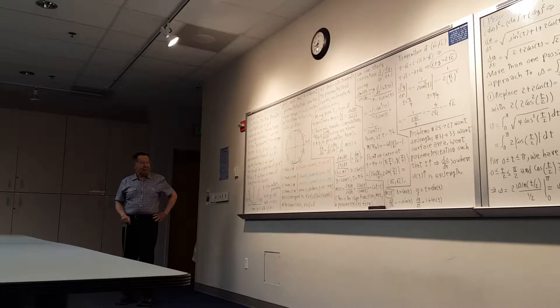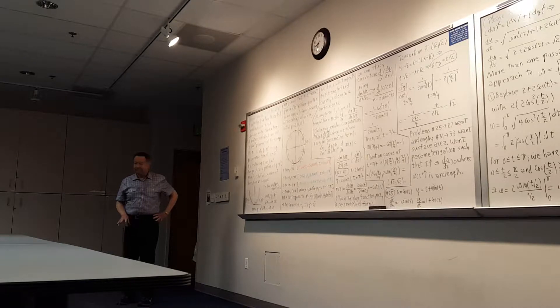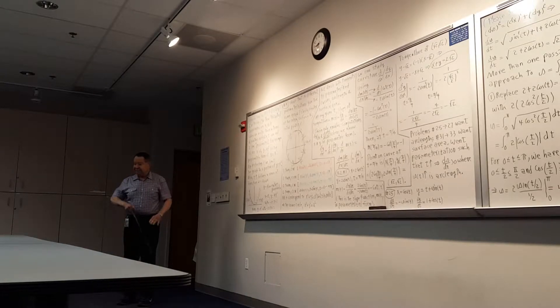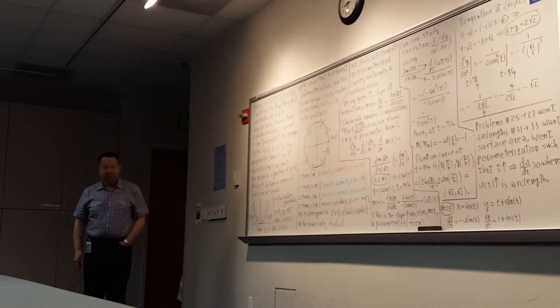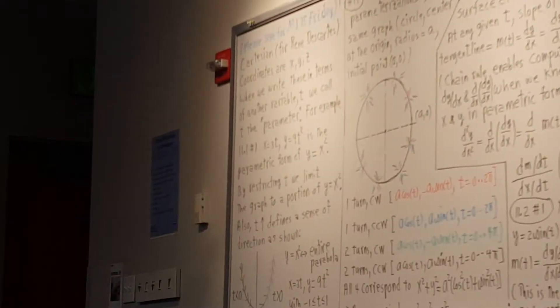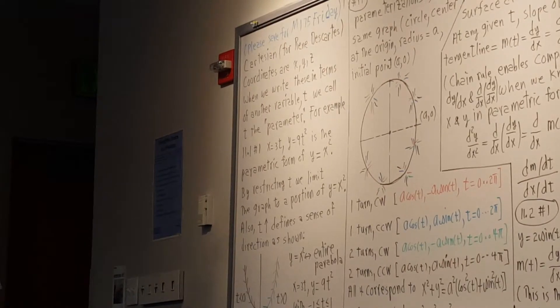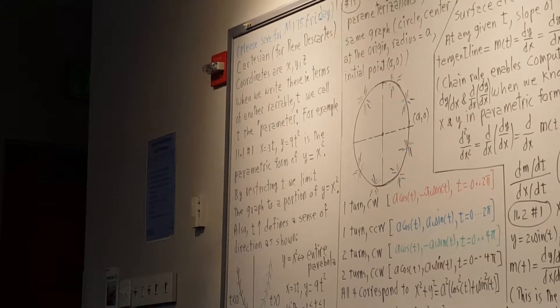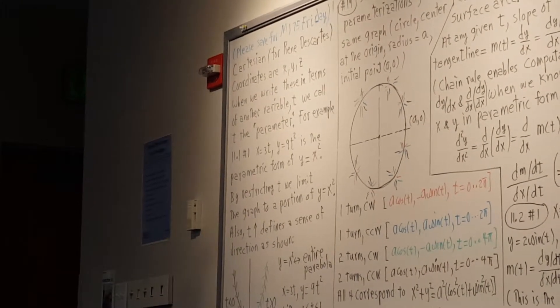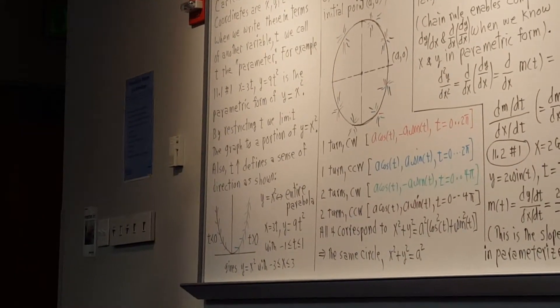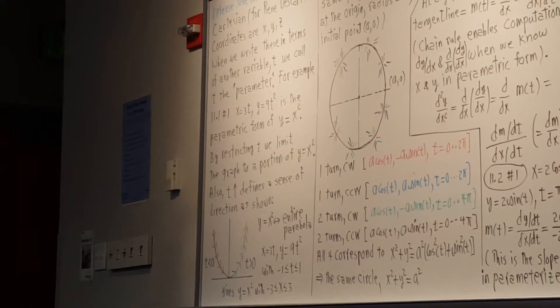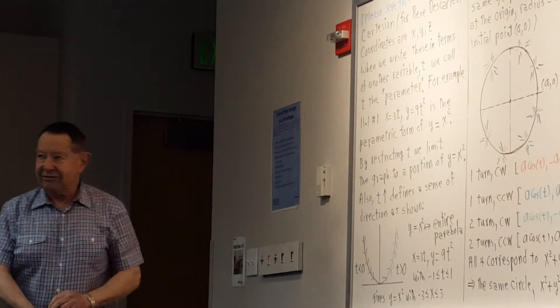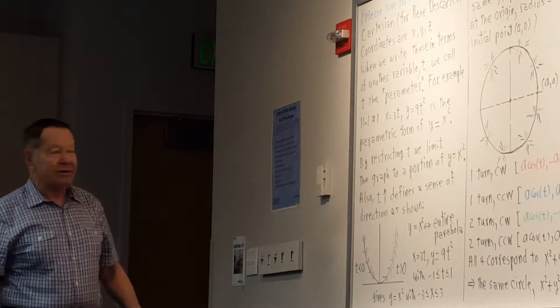We're discussing parametric equations: how you define slope and related ideas in terms of a parameter. The chapter then continues to talk about polar coordinate representations as an example of representing things with two parameters. That's the general idea of what we're going to cover today.